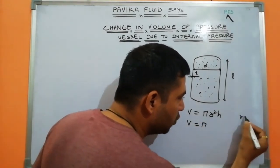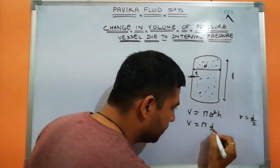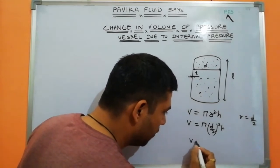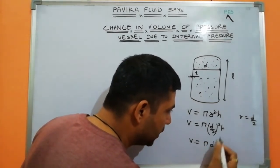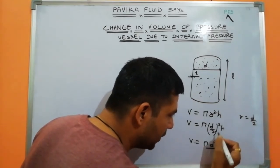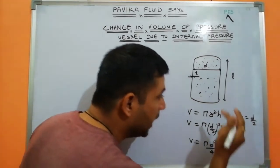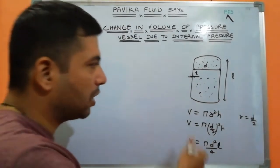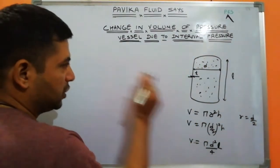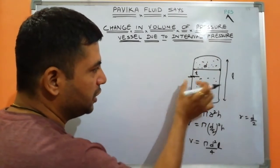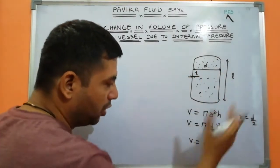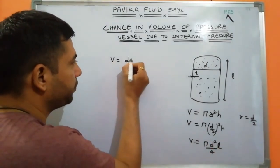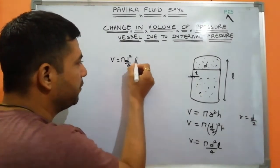I want the formula in terms of diameter, so replace r with d/2: V = π(d/2)²h = πd²h/4. For our pressure vessel with diameter d, thickness t, and length l, this becomes V = πd²l/4. That is the volume formula we'll use.